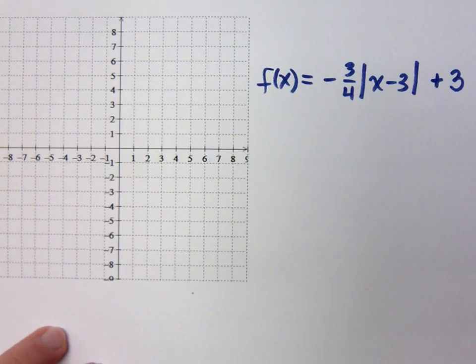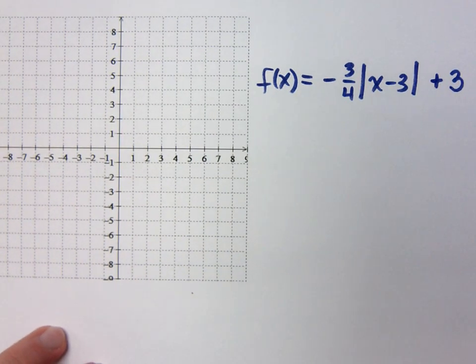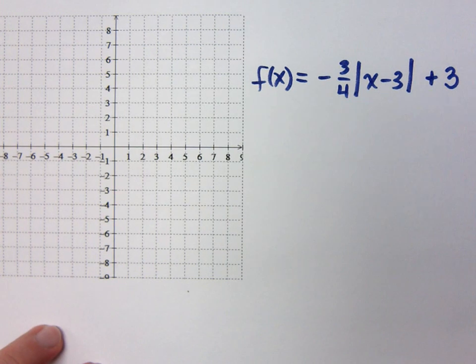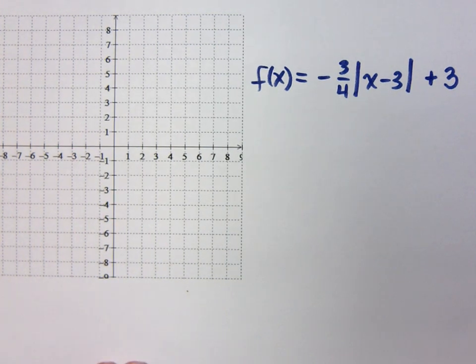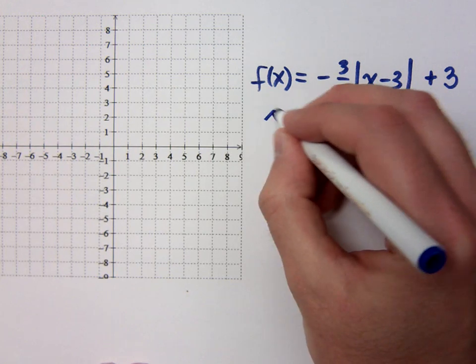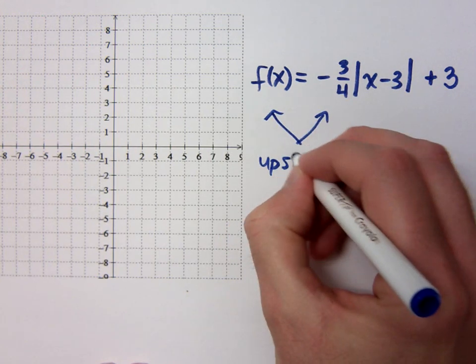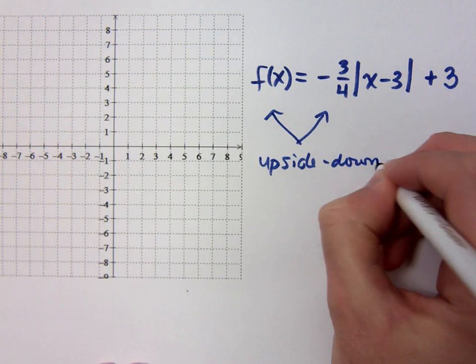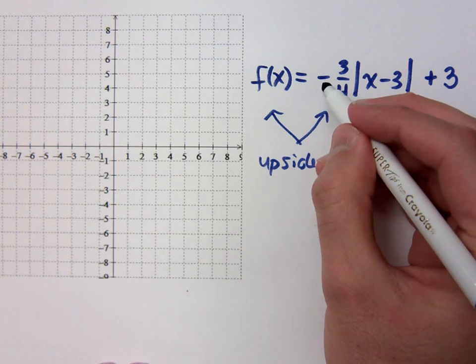All right, one last example. I'll try to make it easy for you. What do you know about the shape of this guy? It's a V shape, so why is it upside down? Because of the negative, it turns it upside down.